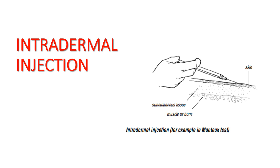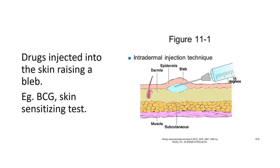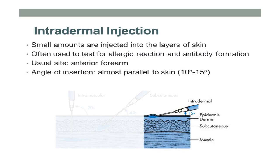Intradermal injection: the drug is injected just below the skin surface, above the subcutaneous tissue, at an angle of 15 degrees with the skin, raising a bleb. Examples include BCG and skin sensitizing tests. Only a small amount is injected into the layers of skin; often used for testing allergic reactions and antibody formation. The usual site is the anterior forearm.